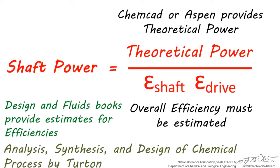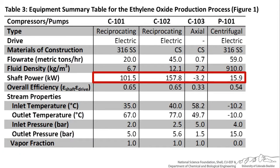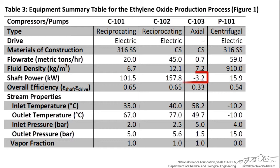Once you've estimated the shaft and drive efficiencies, you can calculate overall efficiency, which then gives us shaft power. Notice that C103 has a negative shaft power, because this is a turbine and not a compressor. Energy is removed from the fluid instead of being added to it, so the sign is negative.